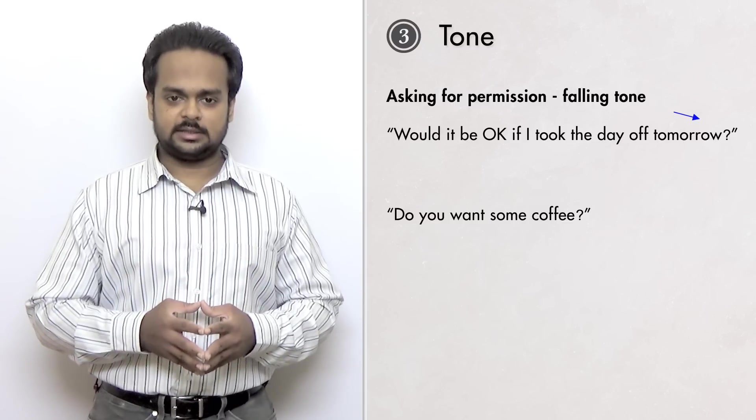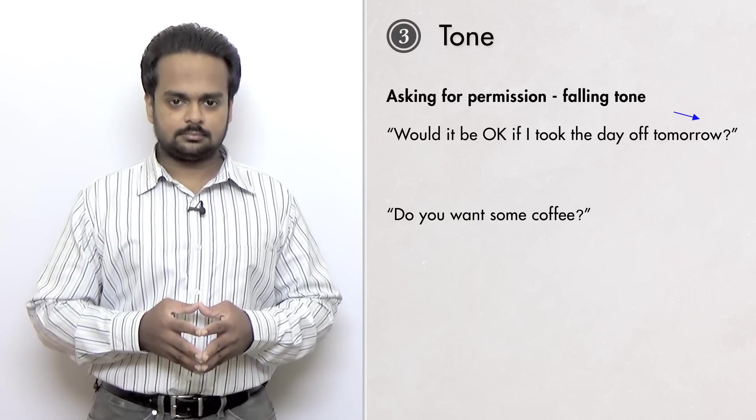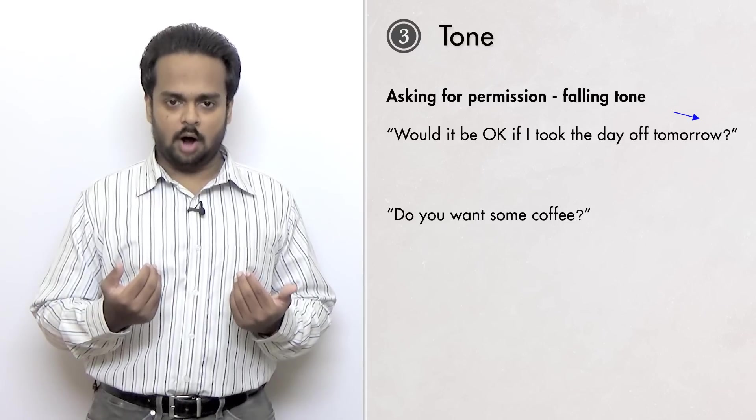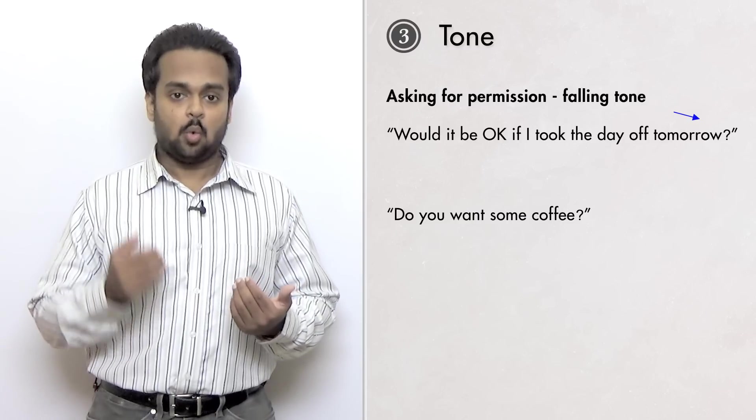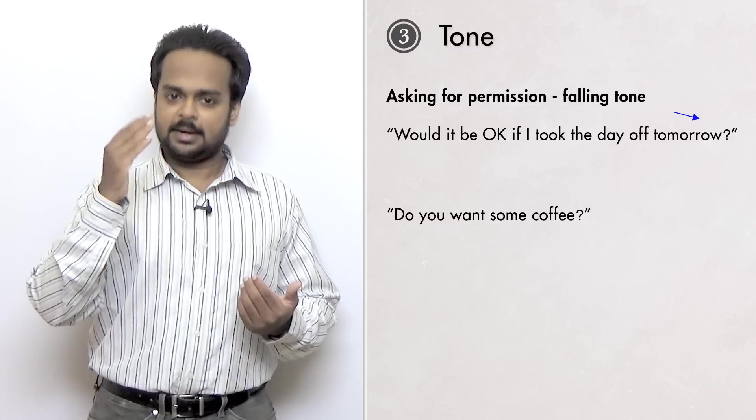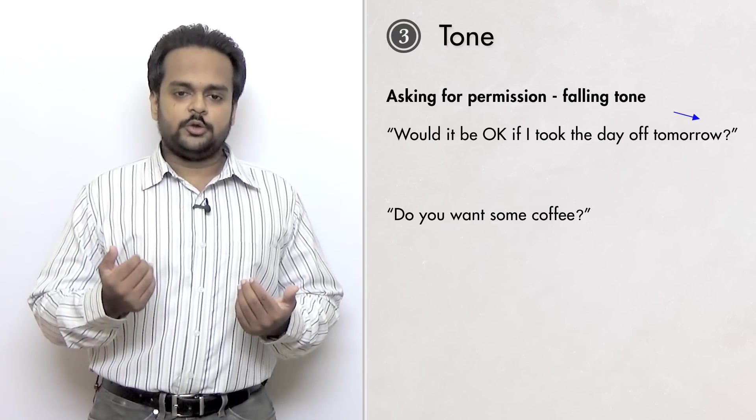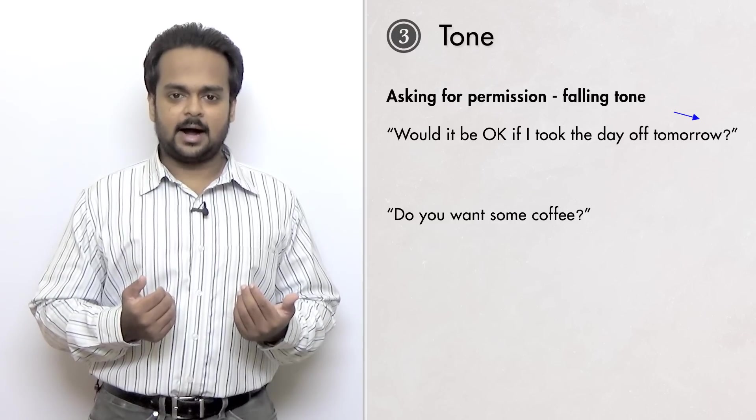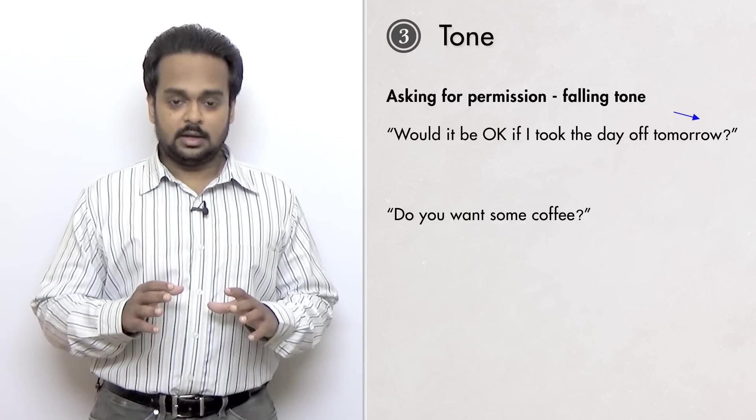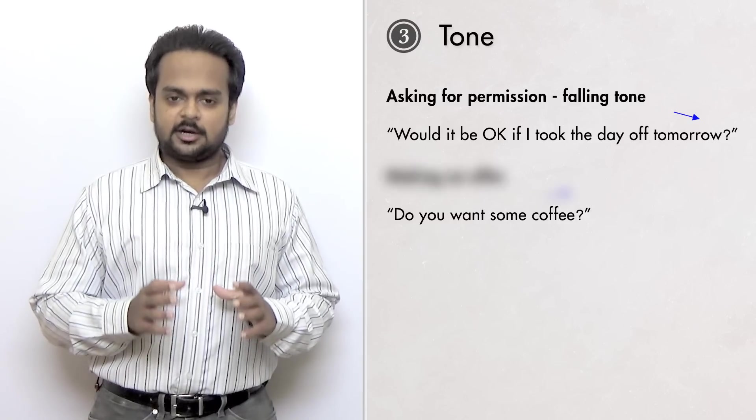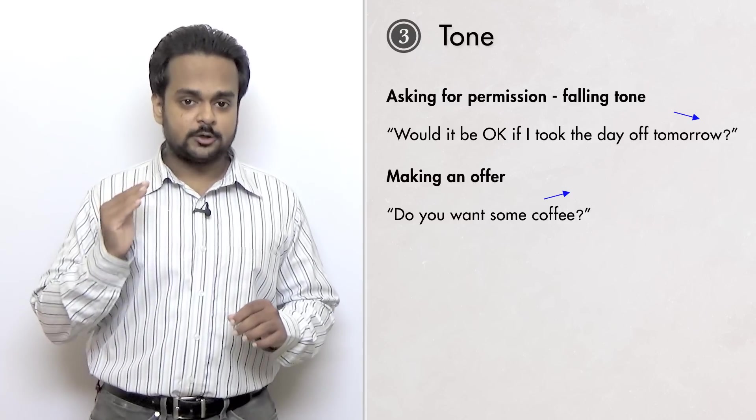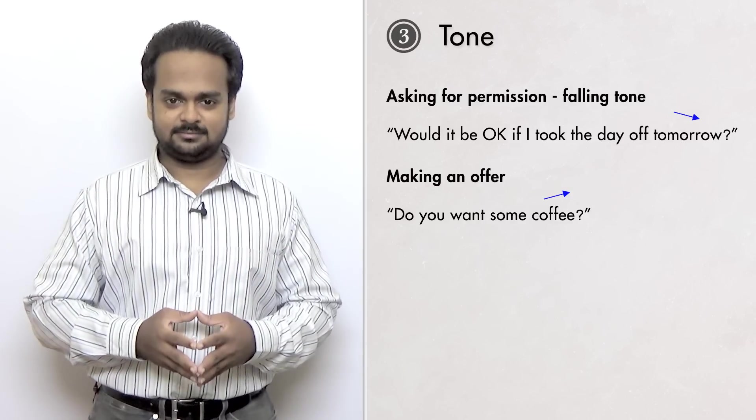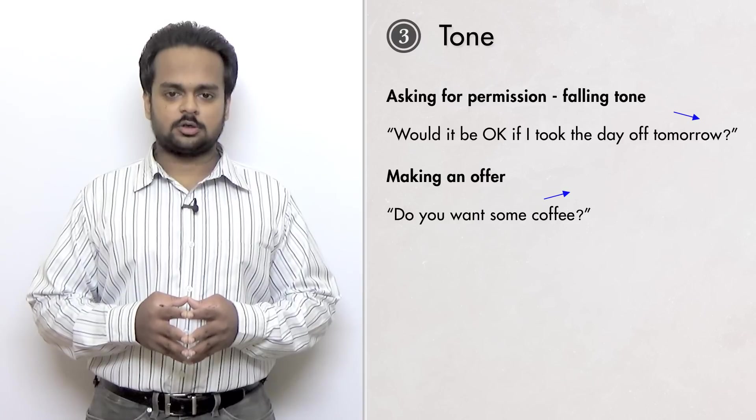And here's one last example. You see, this is an offer. Maybe you're a guest at my home and I'm offering you coffee. This should be said with a rising tone. But here's the opposite, a falling tone. Do you want some coffee? Sounds terrible, right? It sounds like I'm uninterested, bored, like I don't want you as my guest. Here's the same sentence with my voice going up. Do you want some coffee? Much better. I'm sure that you see the importance of tone now.